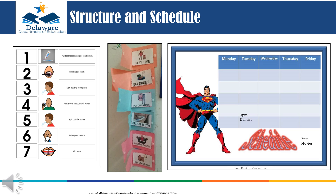When looking to increase structure, consider creating a visual for your child to follow throughout their activity or day. This can be through the use of checklists, visual schedules, or calendars. The example on the left is called a task analysis, displaying the steps to brushing your teeth that can also be used as a checklist. The example in the middle is a visual schedule displaying an after-school routine in which you close each flap upon completion of each activity. The example on the right is a weekly calendar displaying upcoming doctor's appointments and activities to help your child with upcoming transitions.